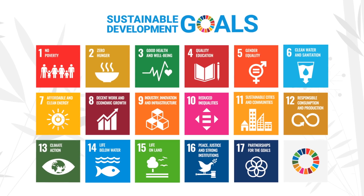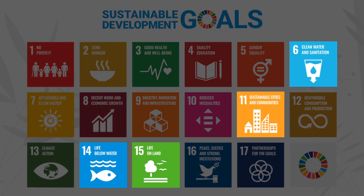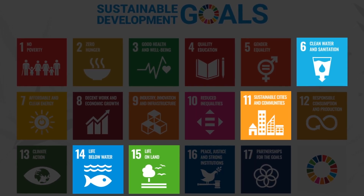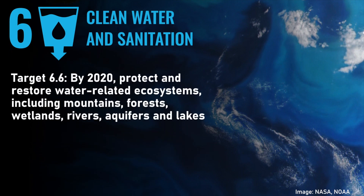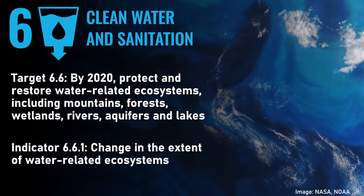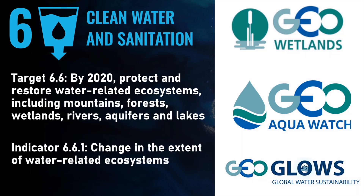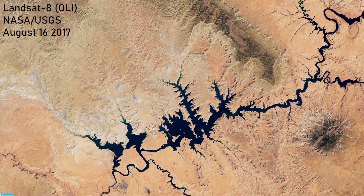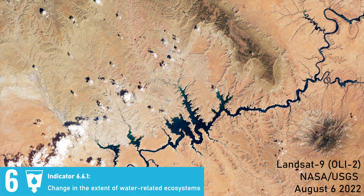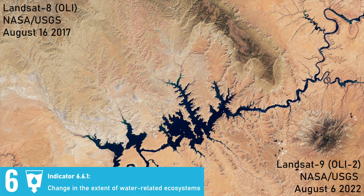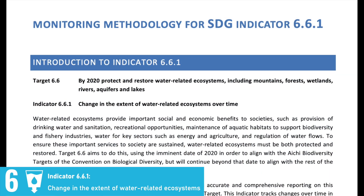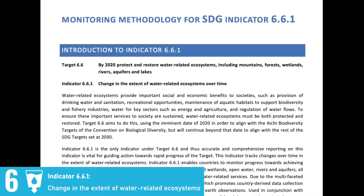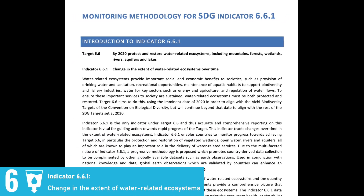Of the 17 SDGs, the SEOS SDG team has focused their initial efforts towards the four SDGs where they believe Earth observations can make the most significant impact. SDG 6 is titled Clean Water and Sanitation, and SEOS has focused on target 6.6 by providing support for the indicator on change of water-related ecosystems. In partnership with GEO Wetlands, GeoAquawatch and GeoGlo's Global Water Sustainability, SEOS has been working on a technical report addressing how satellite data can be used to report on this indicator. The UN Environment Program and Ramsar are the joint custodian agencies for this indicator, and SEOS has reviewed their monitoring methodologies to identify areas for better uptake of satellite observations.